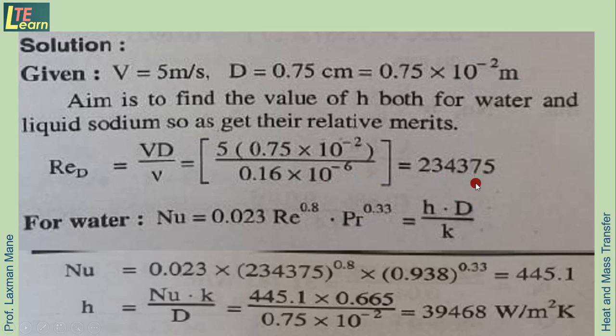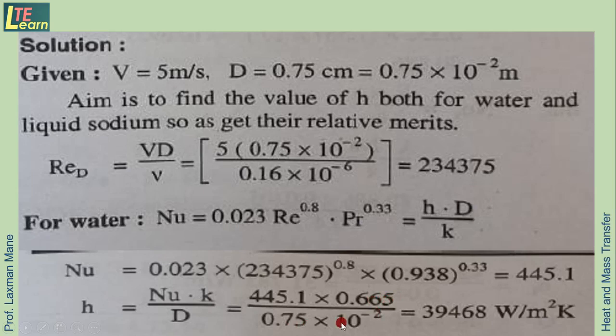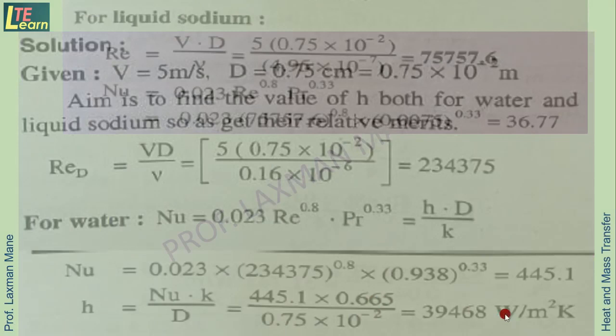The correlation used is Nu = 0.023 × Re⁰·⁸ × Pr⁰·³³, equated to H·D/K. Substituting Reynolds number and Prandtl number for water, we find the Nusselt number. Then H = Nu × K / D. Using the calculated Nusselt number, thermal conductivity of water, and diameter in meters, we find the heat transfer coefficient H for water.